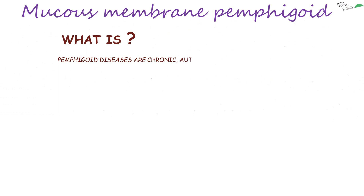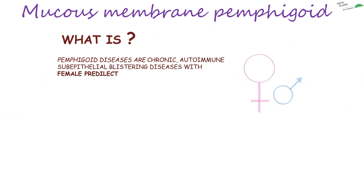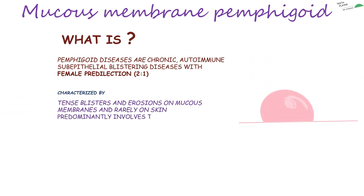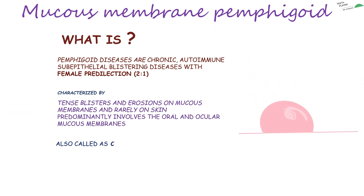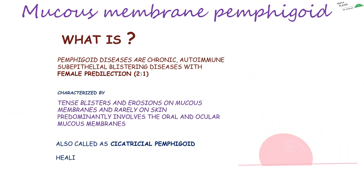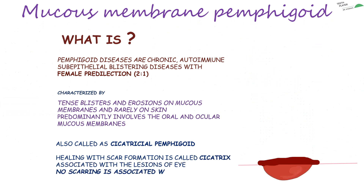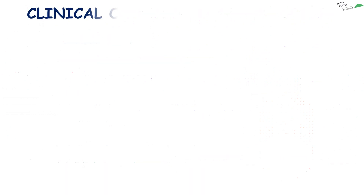Pemphigoid diseases are chronic autoimmune sub-epithelial blistering diseases with female predilection of two to one, characterized by tense blisters and erosions on mucous membranes and rarely on skin. It predominantly involves the oral and ocular mucous membranes. Also called cicatricial pemphigoid, healing with scar formation is called cicatrix. Scarring is associated with ocular lesions; no scarring is associated with oral lesions. Let's take a clinical outlook.